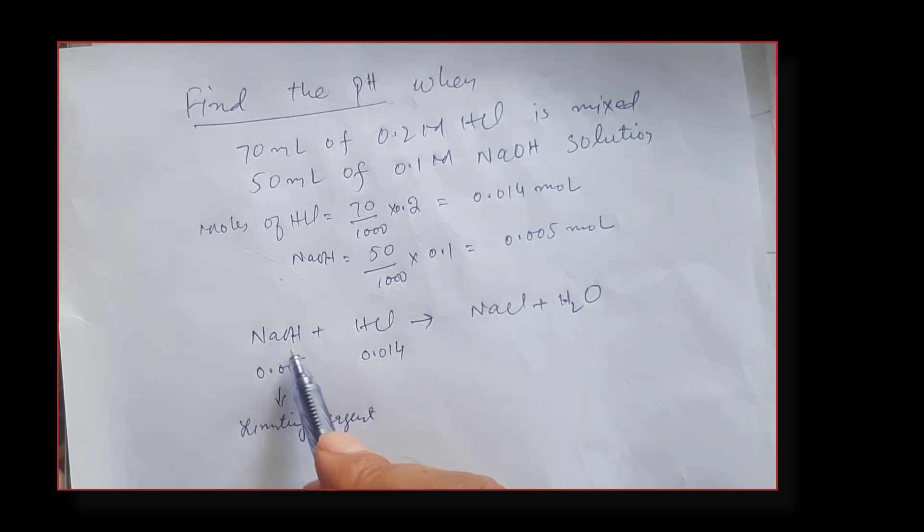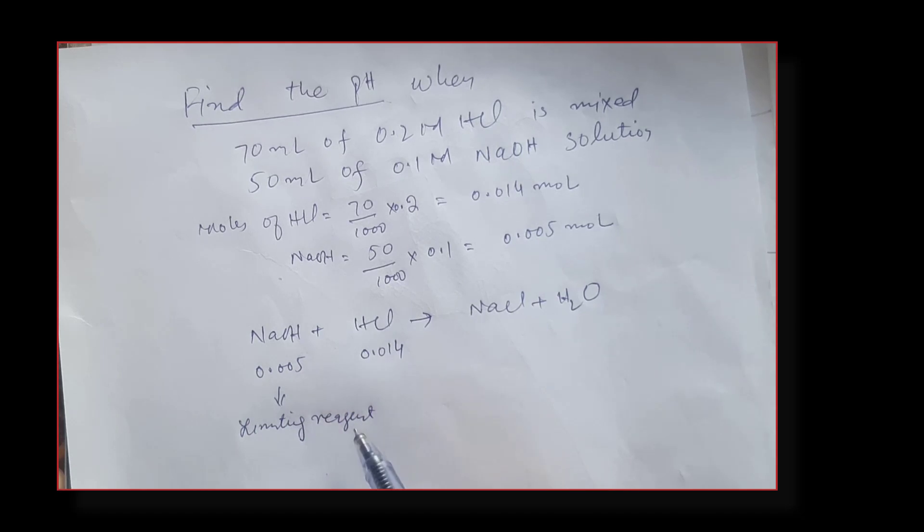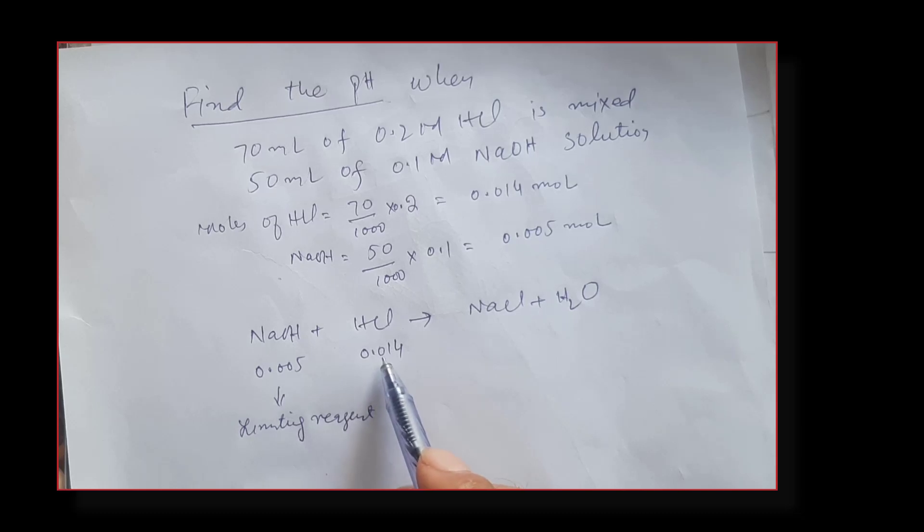This means the sodium hydroxide will consume first in the reaction, leaving behind some HCl. So 0.005 moles of sodium hydroxide will neutralize 0.005 moles of HCl, leaving behind some HCl that will turn our solution into an acidic one.